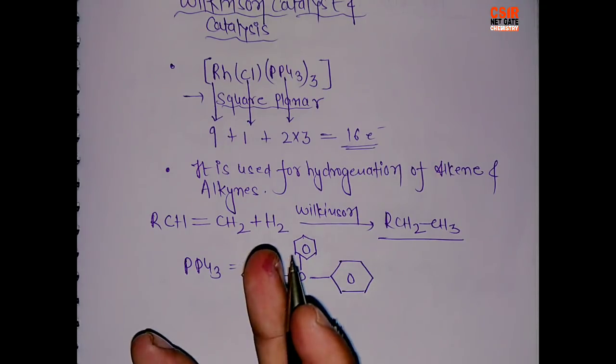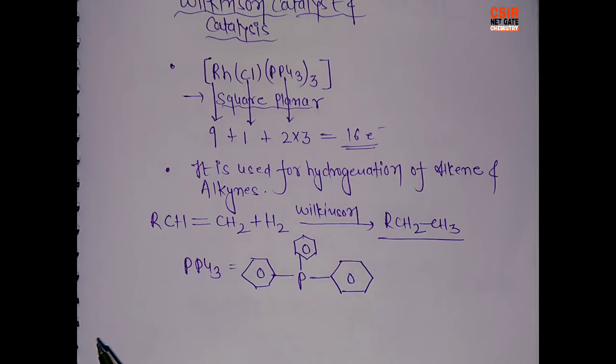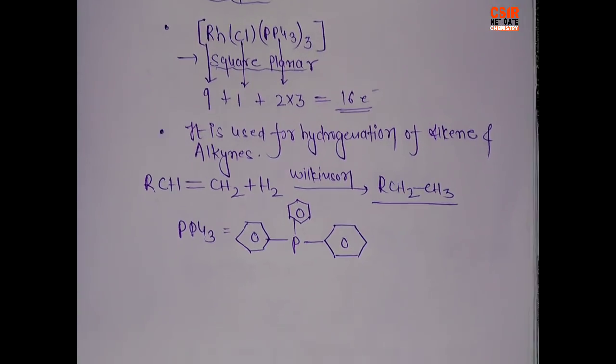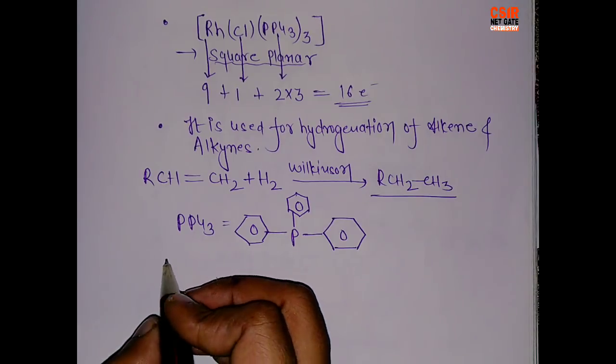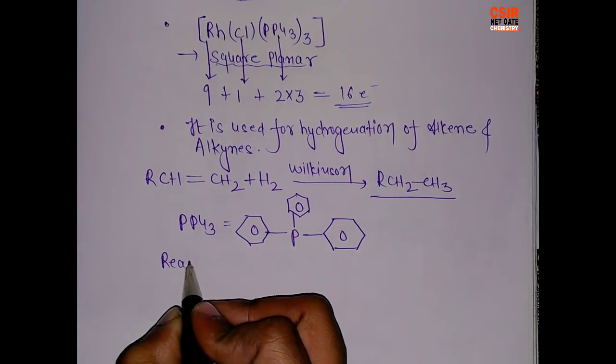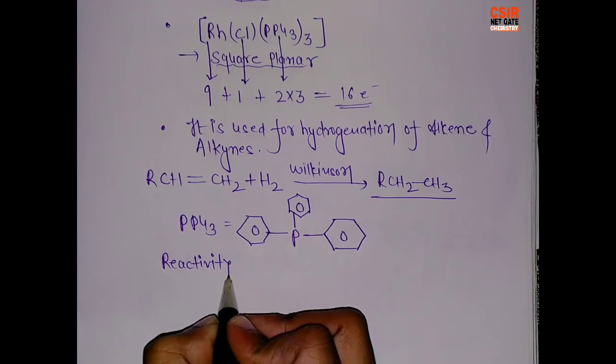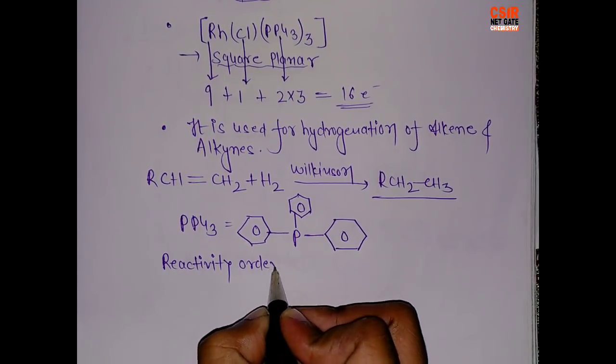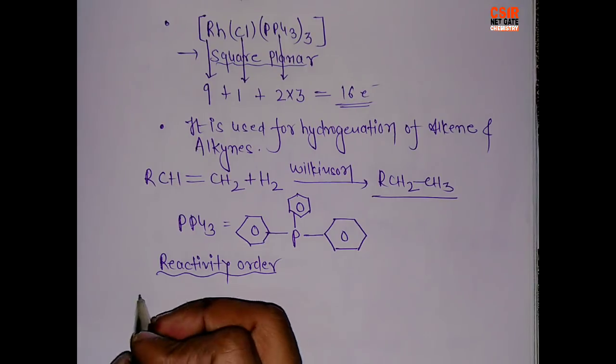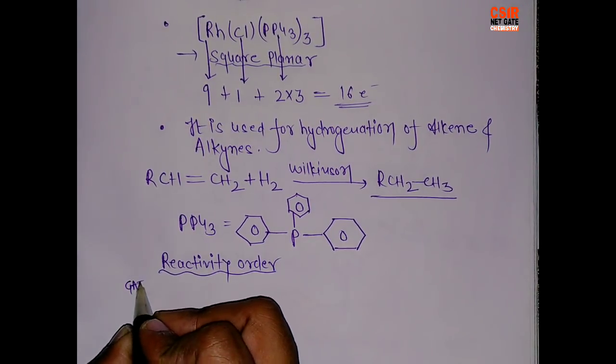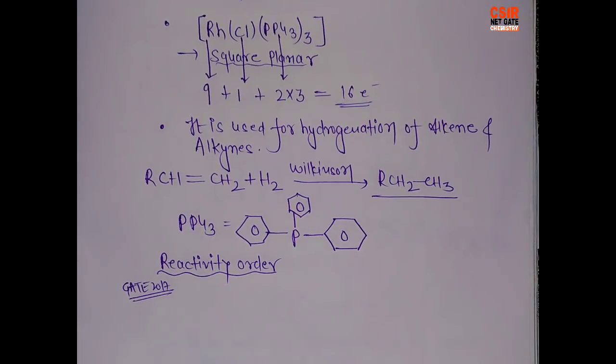So it will hydrogenate that compound which will be sterically unhindered, because this is very sterically hindered. Let's say we have 2 unsaturated sites, one is saturated and one is least saturated. So it will hydrogenate that site which will be least hindered. Another point is reactivity order.